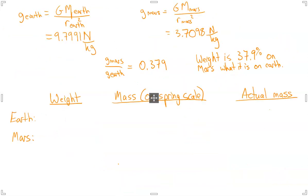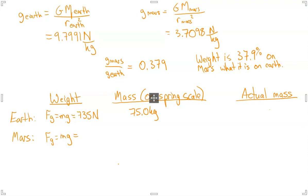It's important to distinguish the difference between weight and mass. Weight is a measure of the force of gravity acting on you, and we calculate weight by taking the mass and multiplying it by the gravitational field strength. So on Earth, if you have a mass of 75 kilograms, your weight would be 75 kilograms times 9.7991, giving you a weight of 735 newtons. Likewise, if you were to take your weight on Mars, you would take 75 kilograms and multiply it by 3.7098, and you would get 278 newtons.